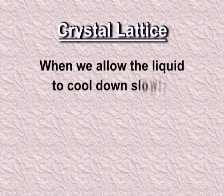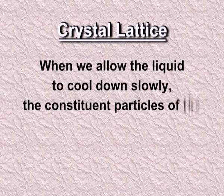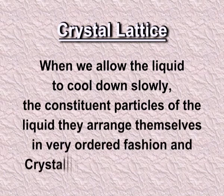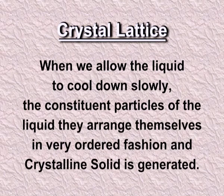Crystal lattice — when we allow the liquid to cool down slowly, the constituent particles of the liquid arrange themselves in a very ordered fashion and a crystalline solid is generated. For example, when we cool water, we get ice, and ice is a crystalline solid. A crystalline solid is made up of small crystals and the constituent pattern is known as the crystal lattice.